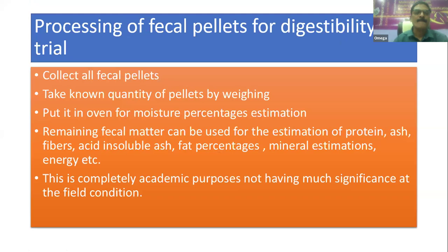For processing fecal matter for digestibility trials, collect the fecal sample, weigh a known quantity of pellets, and place them in an oven for moisture percentage determination. The remaining fecal matter can be used for estimation of protein, fibers, acid-insoluble ash, fat percentage, mineral estimations, and energy. This is a completely academic-purpose method with not much significance at field conditions.